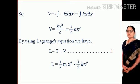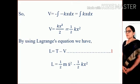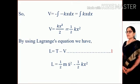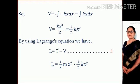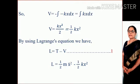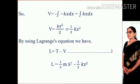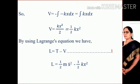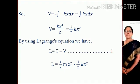Using the Lagrangian for any system, we know that L equals kinetic energy minus potential energy, i.e., L = T − V. Putting in the values of T and V, we get L = (1/2) m x-dot squared minus (1/2) k x squared.